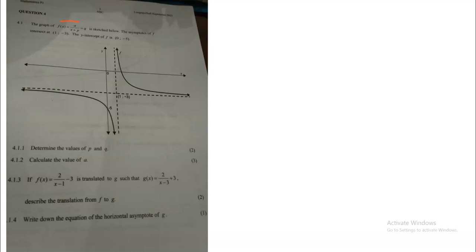When you get this question, first thing first, you must look at the given function. Based on that given function, you must know that format represents the hyperbola. With a hyperbola we get asymptotes — those dotted lines on the graph. You can clearly see on the x-axis we've got one asymptote, and on the vertical axis the asymptote is negative three. The horizontal or x-asymptote represents p, so p equals one. The y-asymptote is q, so q equals negative three — that gives you two marks based on the graph.